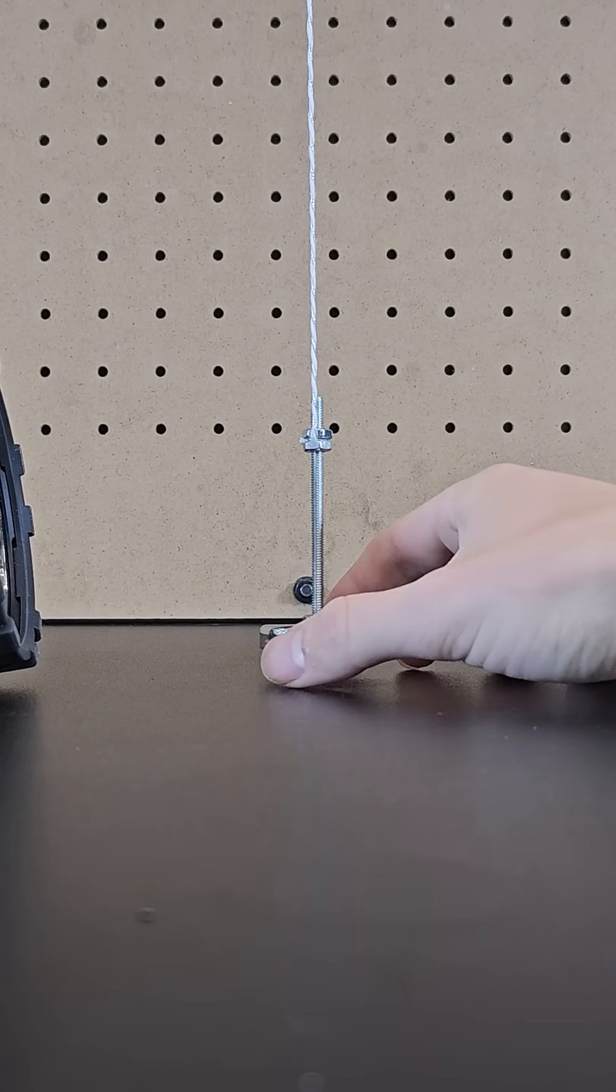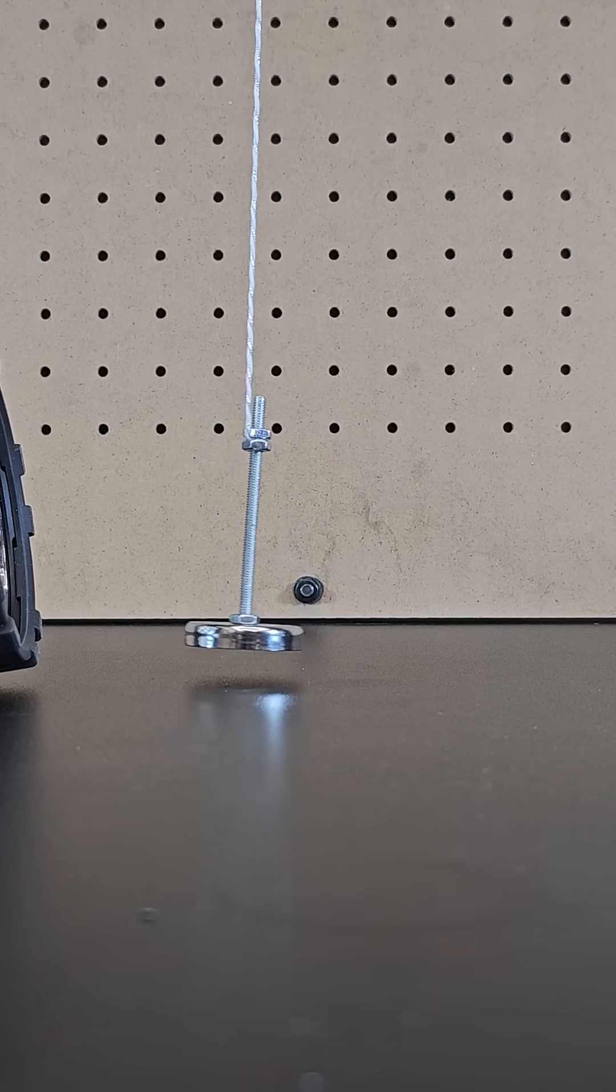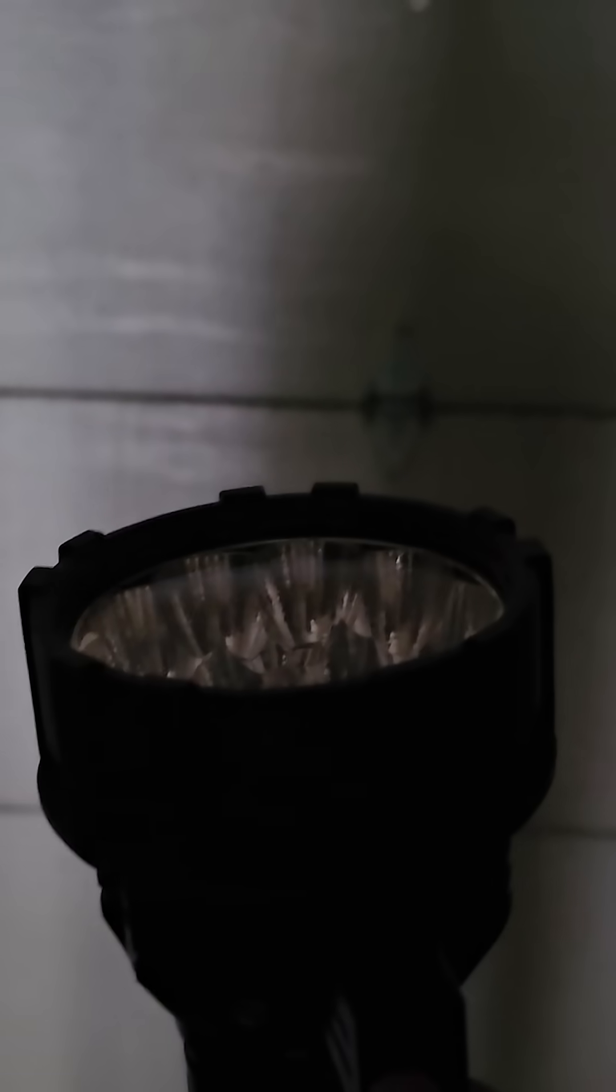If you take a weight and attach it to a string, you've created a pendulum that can swing back and forth freely. However, you can actually use light to affect the motion of a pendulum.